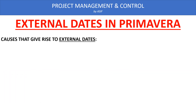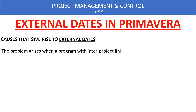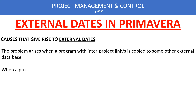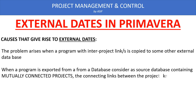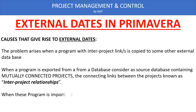Now we see the causes that give rise to external dates. External dates are generated when a program is linked with another program in the same database. When we copy this program from the source database to some other database, these inter-project links are converted into external dates as constraints. So the main cause of generating external dates is these inter-project relationships, which are sometimes ignored and missed by us — a negligence by the programmer.